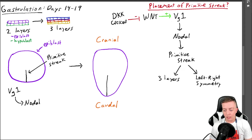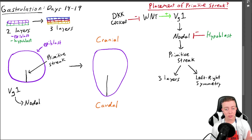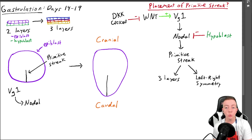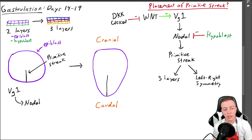The next regulating factor comes from the hypoblast. It's very important that the primitive streak only happens in the epiblast. There is a collection of transcription factors in the hypoblast that are going to inhibit Nodal. Since VG1 acts on Nodal to get the primitive streak, without these inhibitory factors in the hypoblast you would get primitive streak formation there — and we do not want that. So more transcription factors are telling Nodal it should not form a primitive streak in the hypoblast.